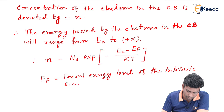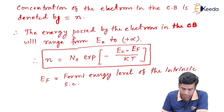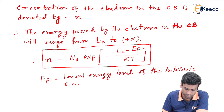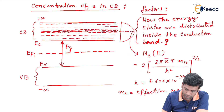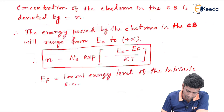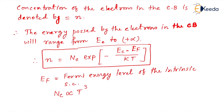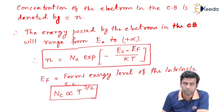This equation gives us the concentration of electrons inside the conduction band. We also know from the NCE equation that the NCE value is proportional to temperature to the power 3/2. These two equations are very important with respect to the concentration of electrons inside the conduction band. This is all about the concentration of electrons inside the conduction band. Thank you.